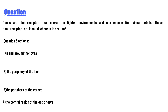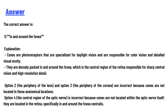The options are: first, in and around the fovea; second, the periphery of the lens; third, the periphery of the cornea; fourth, the central region of the optic nerve. The correct answer is: in and around the fovea.